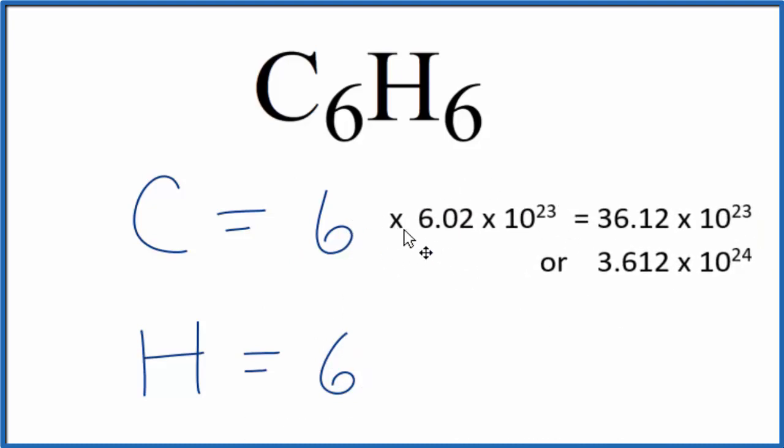When you do that, six times 6.02 times 10 to the 23rd, that'll give you the number of carbon atoms in one mole of benzene.